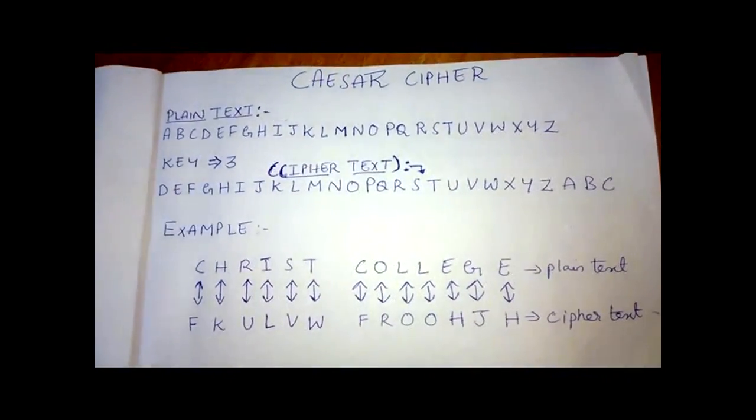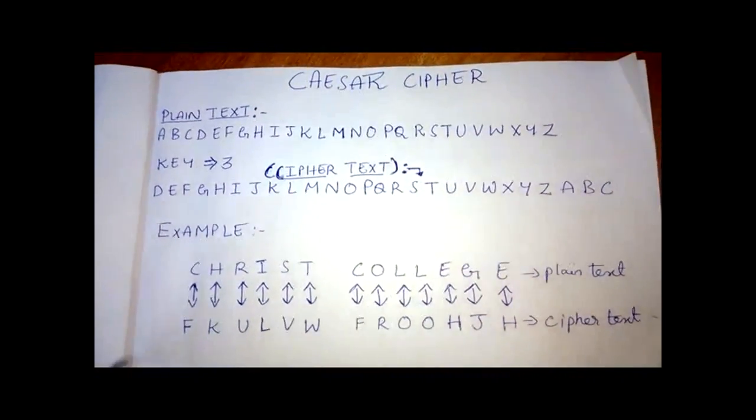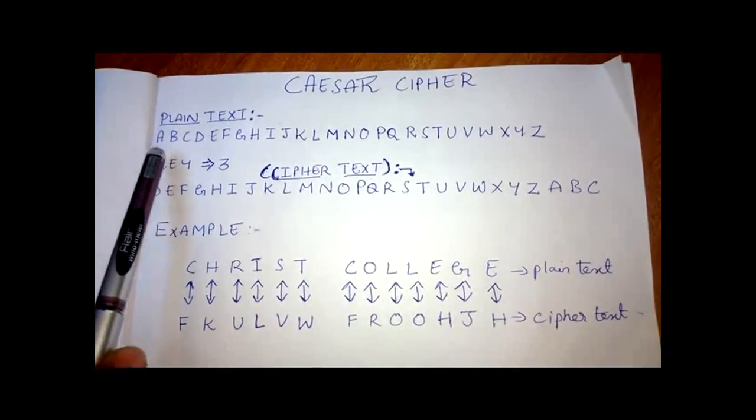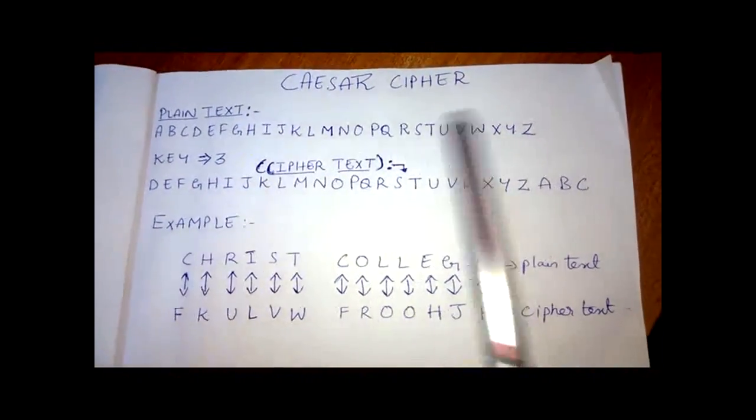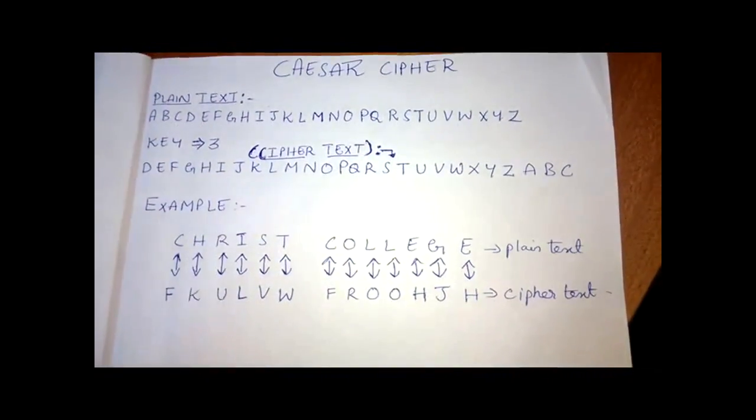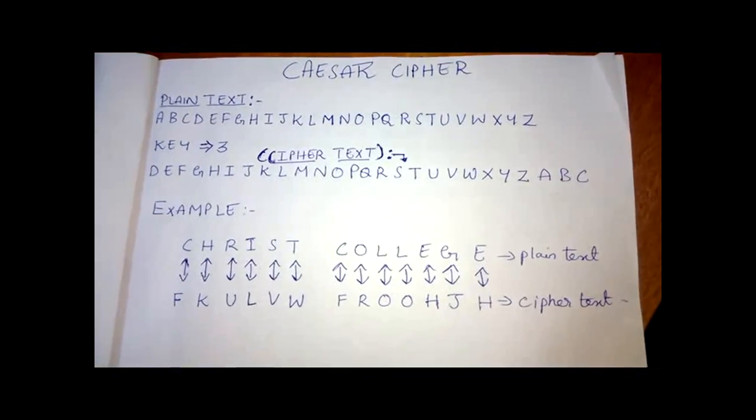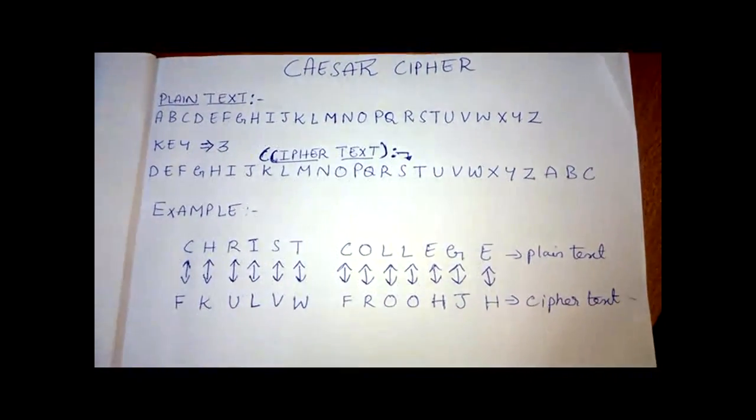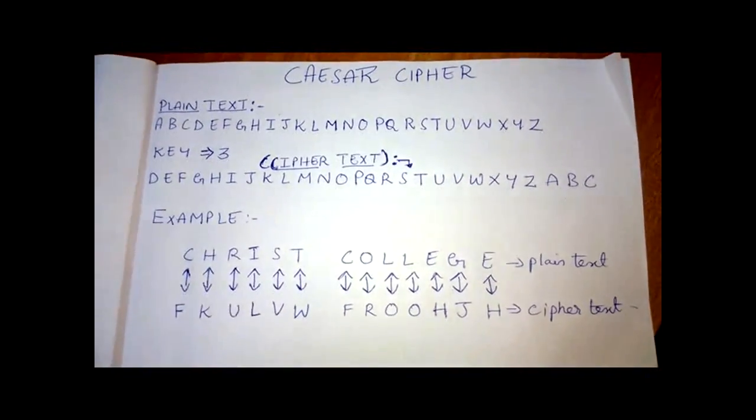Caesar ciphers. I will be briefing you all about Caesar ciphers. As you all can see the plain text, plain text is an alphabetical order from A to Z, A, B, C, D, E, F, G to Z and the key value is equal to 3. The key value may be any number 3, 4, 5, 6. It depends on the sender and the receiver. The key value is shared between the sender and the receiver for them to encrypt and decrypt.